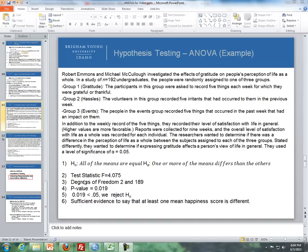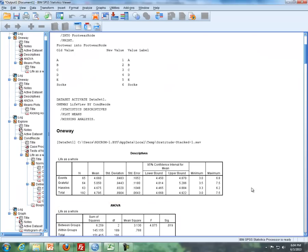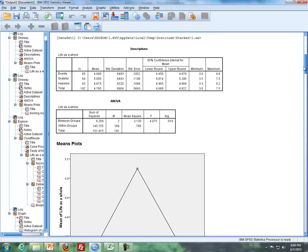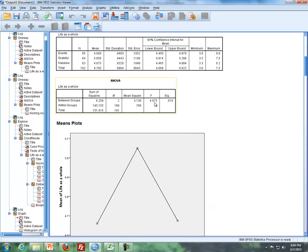Now steps two, three, and four is our test statistic, degrees of freedom, and our p-value. Here are the results here, but where I got those I got from SPSS output. We find this similarly in Excel output. This is my test statistic, it's under the F, which is 4.075.